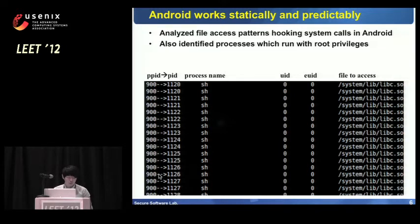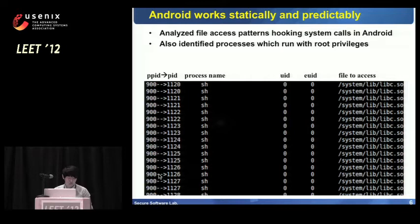By using log records through system call hooking, we found that processes using root privilege are determined, and by collecting and analyzing information about system resources accessed by these processes, we found a method to respond to privilege escalation attacks. We prepared a policy to respond to attacks using the Android feature that root privileges are only used by specific programs.